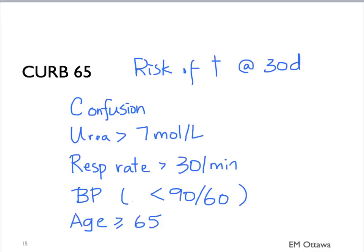Each score is given one point. The higher the number of points, the higher the risk of mortality at 30 days. Patients with a score of 5 has an almost 60% chance of death at 30 days.